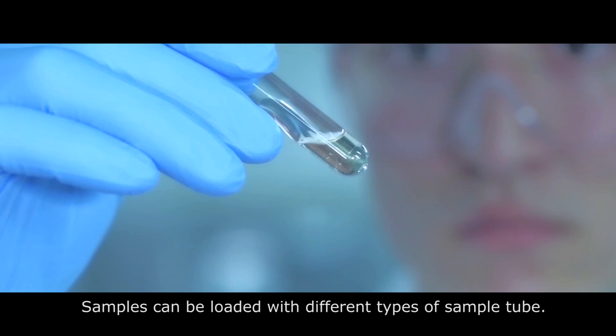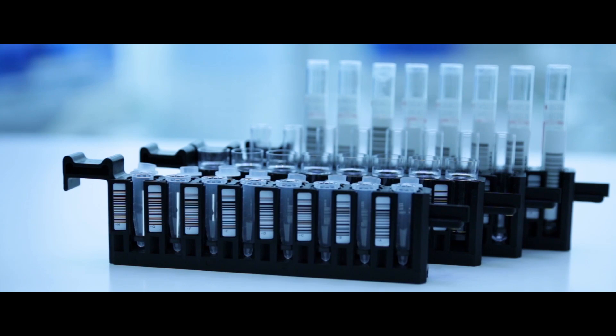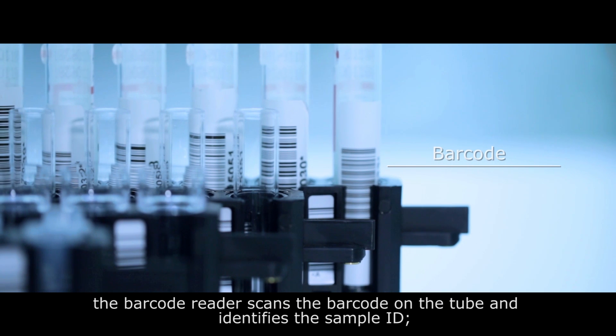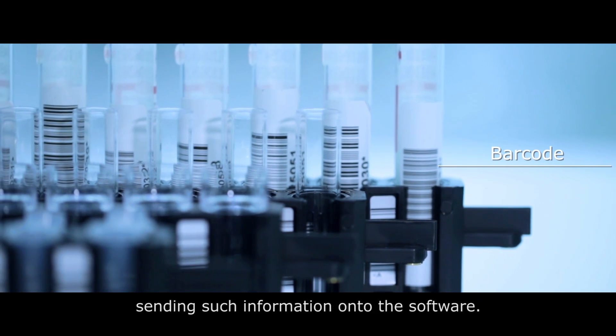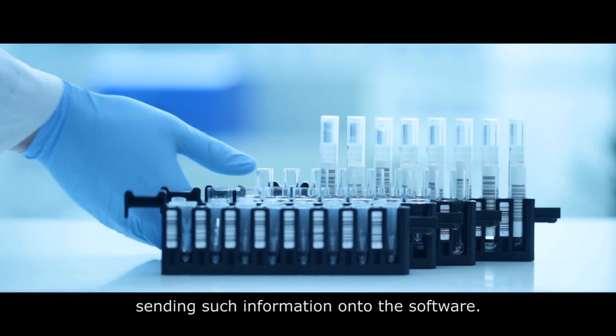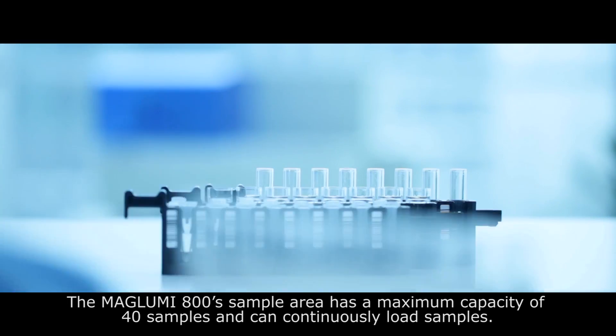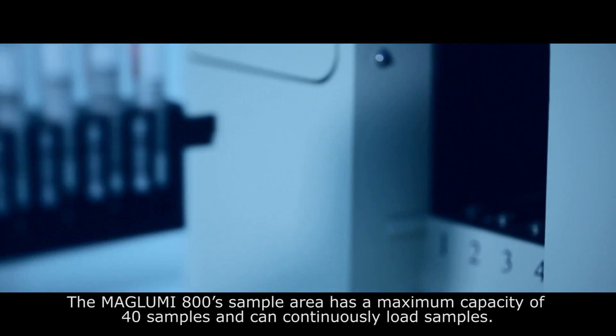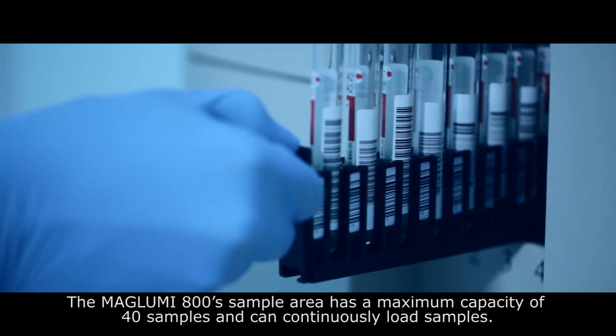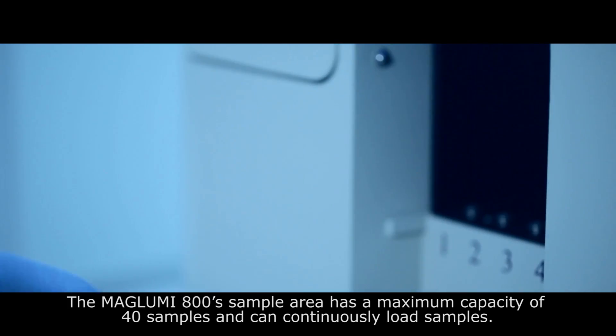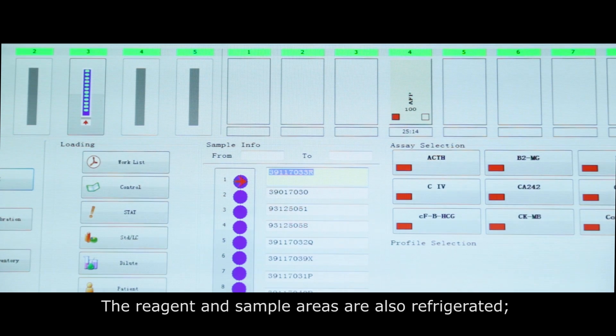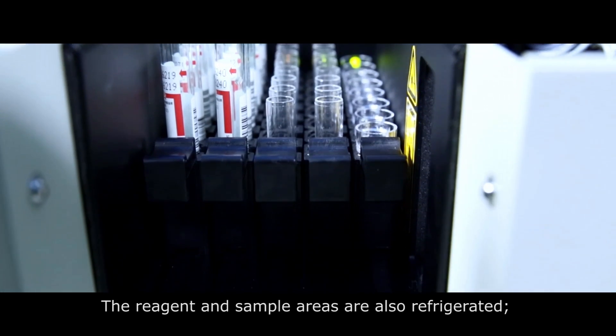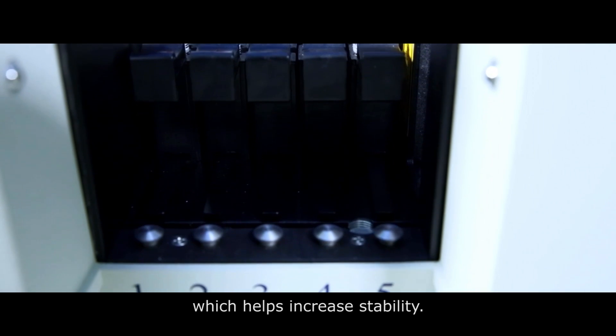Samples can be loaded with different types of sample tubes. When loading the sample, the barcode reader scans the barcode on the tube and identifies the sample ID, sending such information to the software. The Maglumi 800 sample area has a maximum capacity of 40 samples and can continuously load samples. The reagent and sample areas are also refrigerated which helps increase stability.